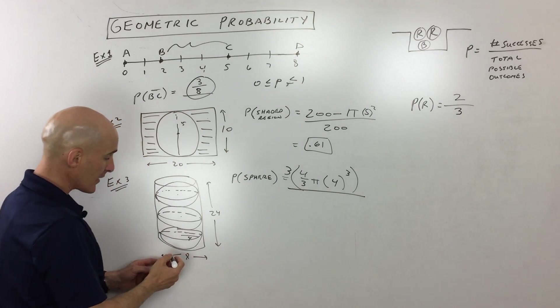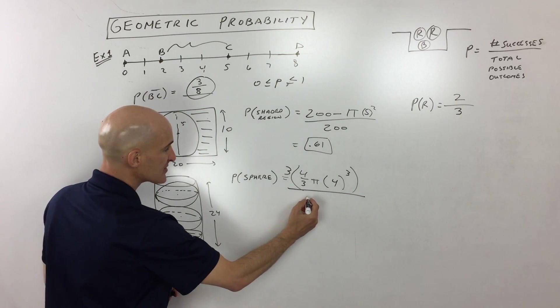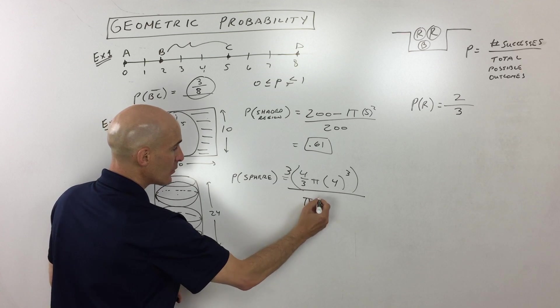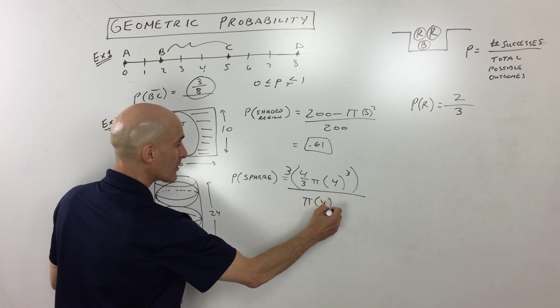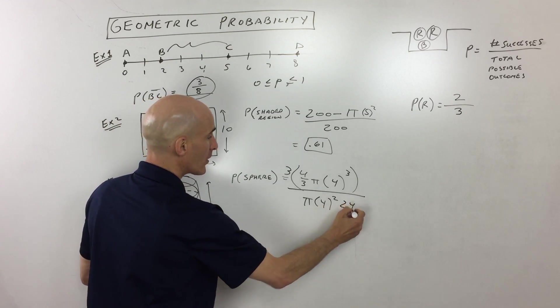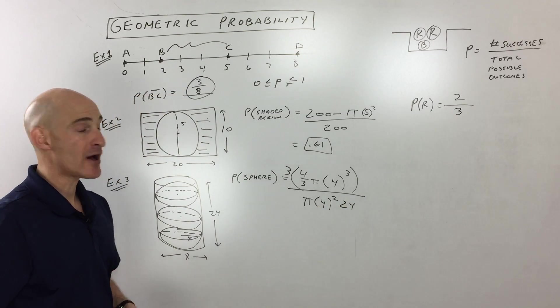And we want to divide it by the total volume, which is the volume of the cylinder. Now remember the volume of the cylinder, it's the area of the base, which is pi r squared times the height, which is 24.